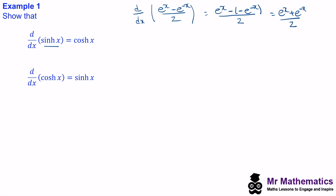To differentiate cosh(x), we again write cosh(x) in its exponential form: (e^x plus e^(-x)) divided by 2. Differentiating e^x gives e^x, and differentiating e^(-x) using the chain rule gives minus e^(-x), all divided by 2. This is exactly the same as sinh(x). So these are both really important for further differentiation.